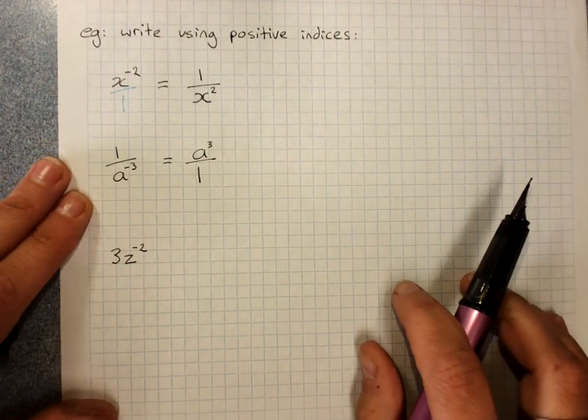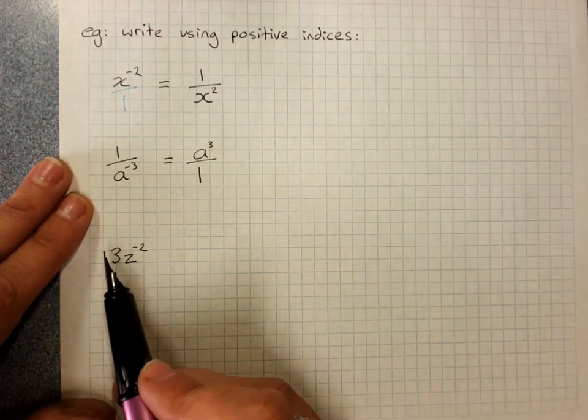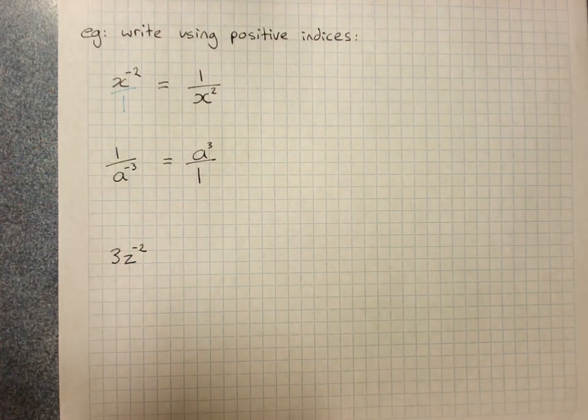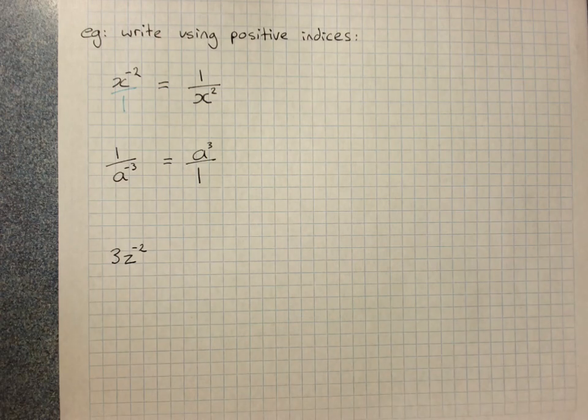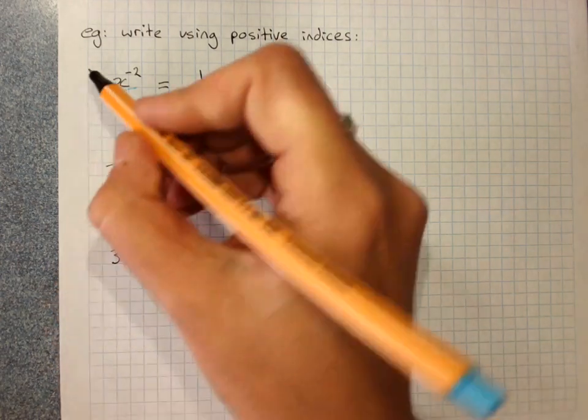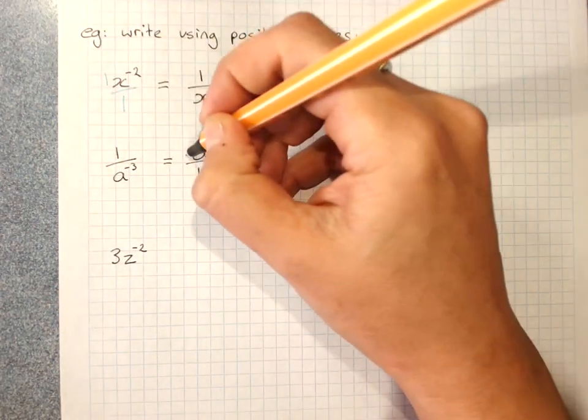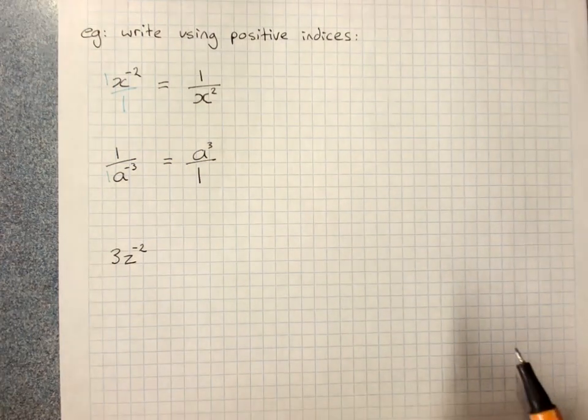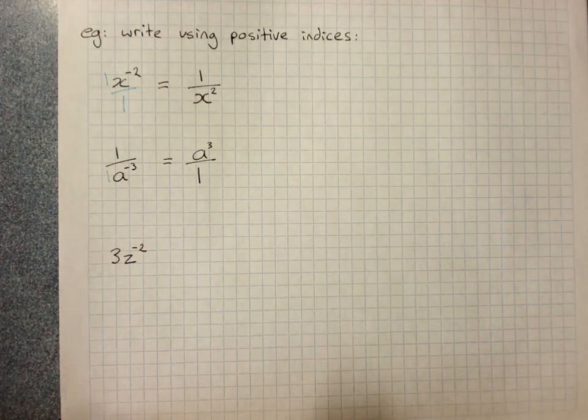Where it can feel like it gets a little complicated is when we have a coefficient of the pronumeral. And actually, in these cases, we still had a coefficient—it was just 1. Honestly, the easiest way to do this is to use working to support your understanding.